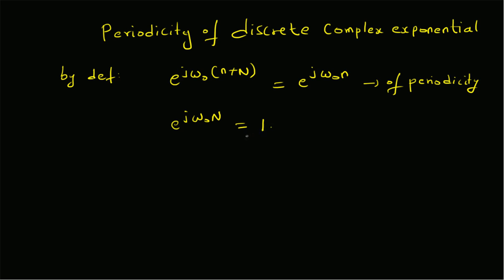What is the implication of this condition? Since e^(jω₀N) = 1, it basically means that the product ω₀·N is equal to an integer multiple of 2π — that is, ω₀·N = 2πm, where m is an integer. Note that N is also an integer.